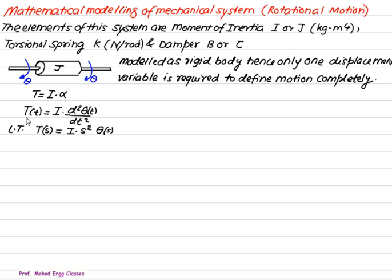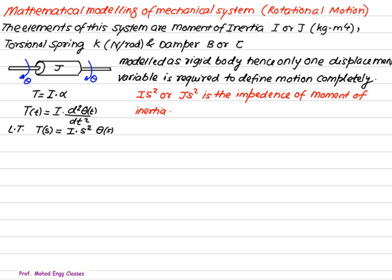If we take the Laplace transform with initial conditions equal to zero, we get T(s) = I · s² · θ(s). This is second order, so we get s² · θ(s). The term Is² or Js² is the impedance of the moment of inertia. So whenever you find J, the impedance equals Is² or Js².